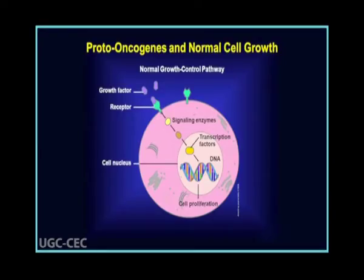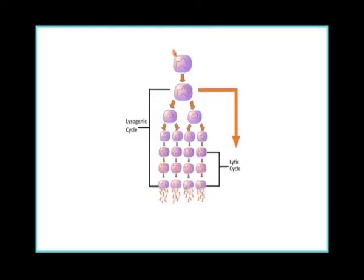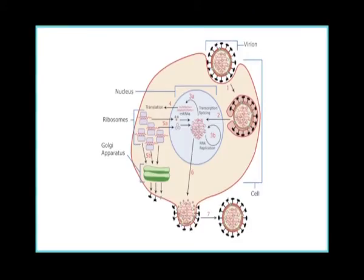It is believed that proto-oncogenes present in the human genome are in fact lysogenic viruses. These viruses integrate with the DNA of host cells, allow the cell to divide for 20, 30, or 40 generations without disturbing it, and finally they turn lytic. Therefore, this group of viruses is called delayed lytic viruses. After allowing the cell and its daughter cells to divide, they become active in the progeny and disintegrate from the host cell DNA.